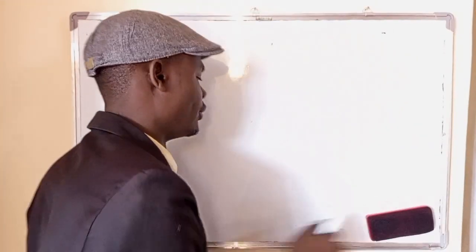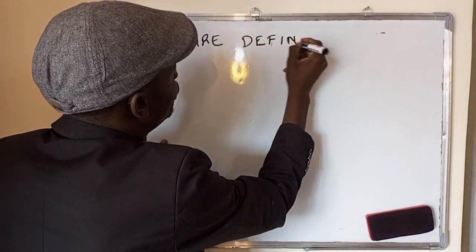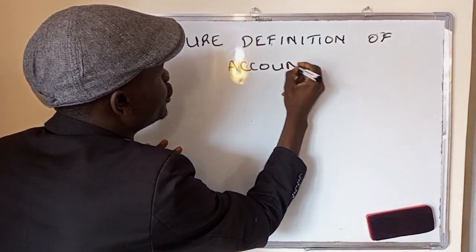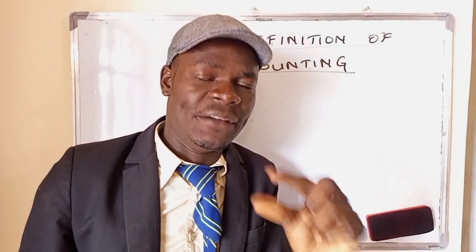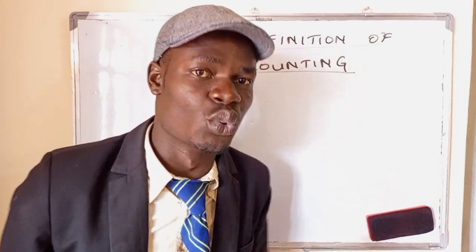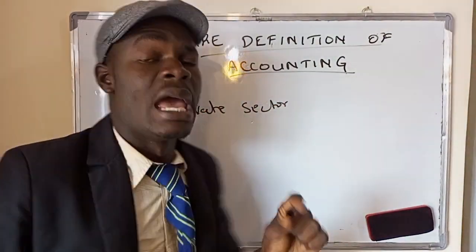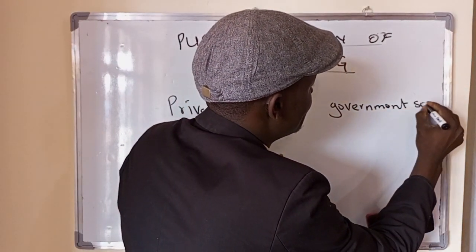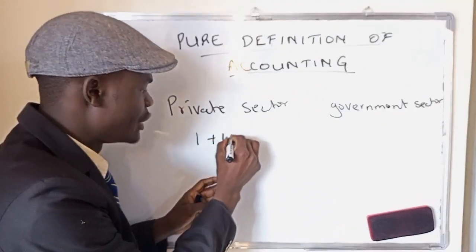Definition of accounting in two different sectors: 1) private sector and 2) government sector. In the private sector, accounting means 1 plus 1 is equal to 2.